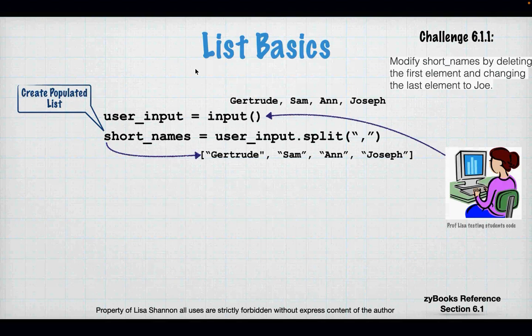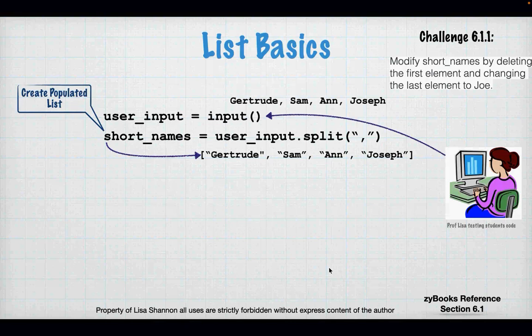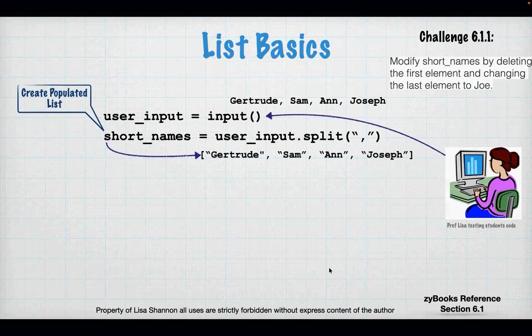A student asks: the split function without anything in the parentheses - what does that mean? That means it is space-delimited. The default delimiter in Python for the split function is always a space. So you could remove the comma argument and just use user_input.split() with nothing in the parentheses, and it would split on a space.